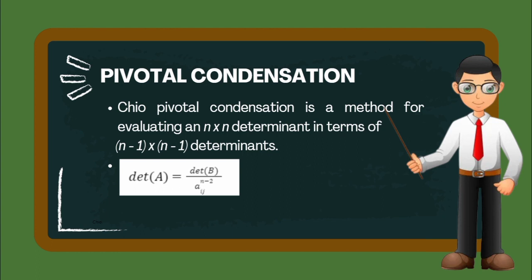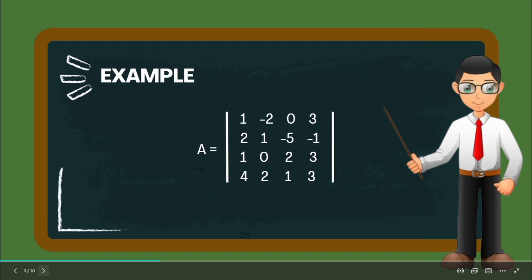A represents the first element or the pivot element, while n represents the number of rows and columns of the matrix. In order to fully understand this method, let's have an example. Let's find the determinant of matrix A. This is a 4×4 matrix.